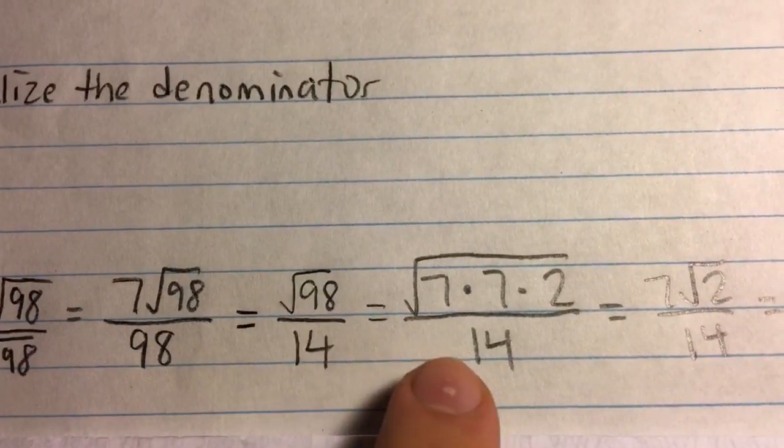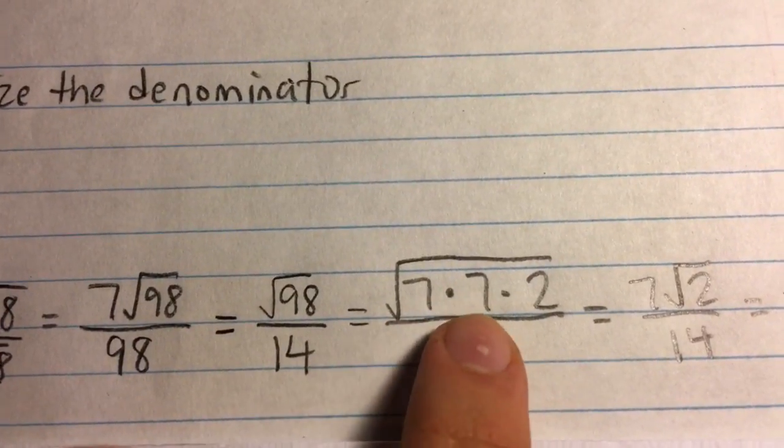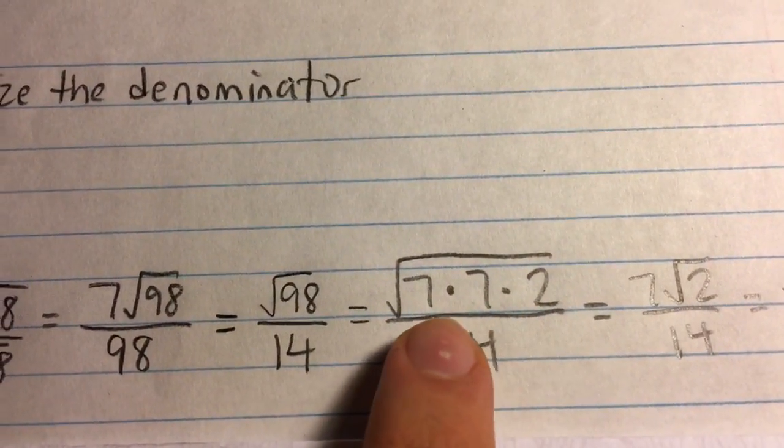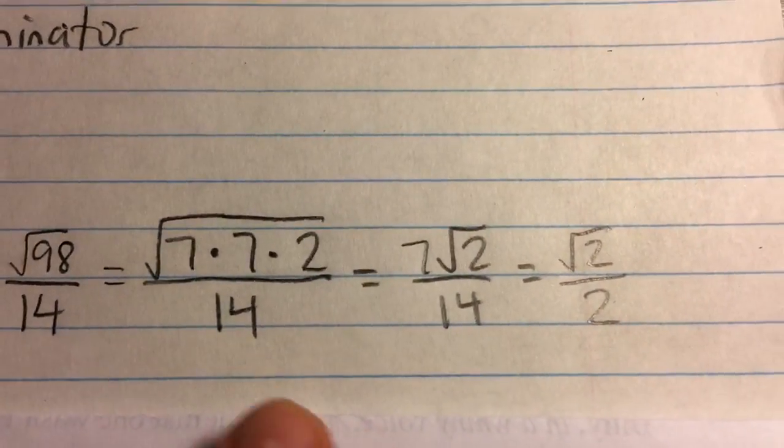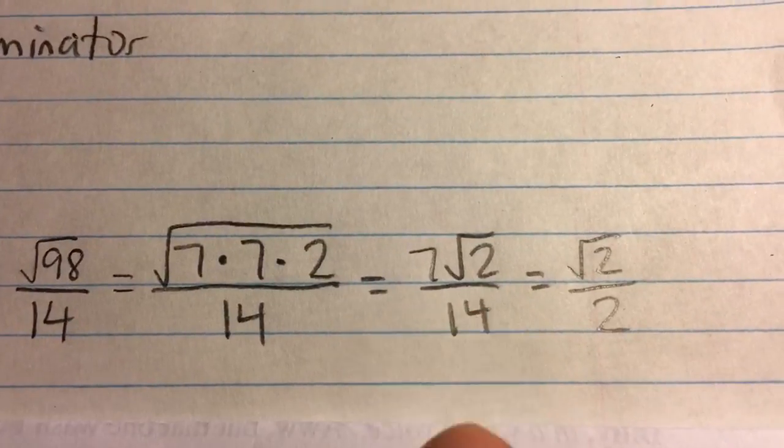And the square root of 98 can be written as 7 times 7 times 2, meaning we have 7 squared here, so we can actually pull out a 7 and just have it times root 2.